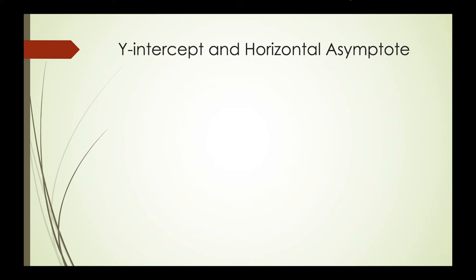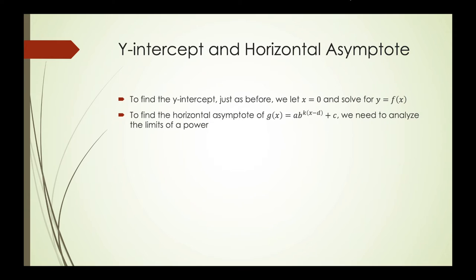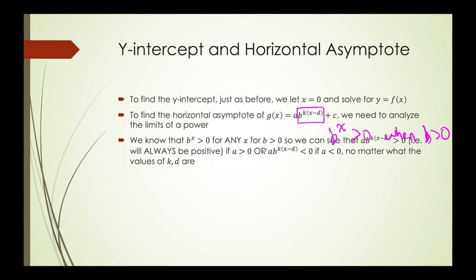Now let's look at the y-intercept and horizontal asymptote. To find the y-intercept of an exponential function, all we're going to do is let x equal 0 and then solve for y or f(x). To find the horizontal asymptote, this is the one that's a little bit more tricky. We have to really analyze what happens in general with exponential functions. We already learned that b to the power of x will always be greater than 0 when b is greater than 0, and this is always going to be the case. So even if I had a different k or d value, my value will always be positive if we just consider this power.